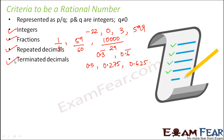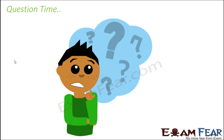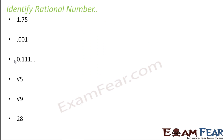All of these can be represented in the form p by q where both are integers and q is not equal to 0. These are the criteria that need to be satisfied for a number to be called a rational number. Now, based on what we have studied, let us look at some questions and identify whether the given numbers are rational or not.